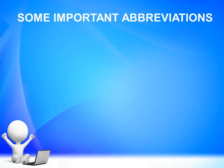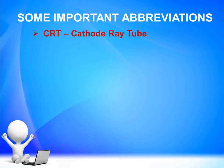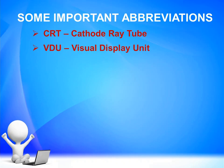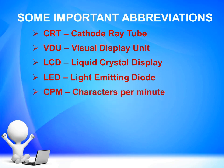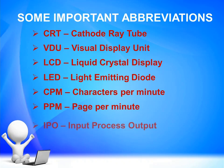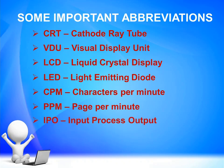Today we have learnt about some input devices and some output devices. Let's note some important abbreviations from this chapter: CRT – cathode ray tube; VDU – visual display unit; LCD – liquid crystal display; LED – light emitting diode; CPM – characters per minute; PPM – pages per minute; IPO – Input, Process, Output.